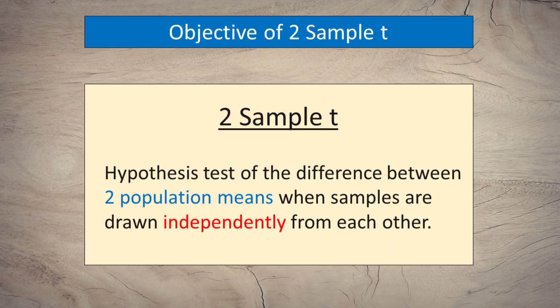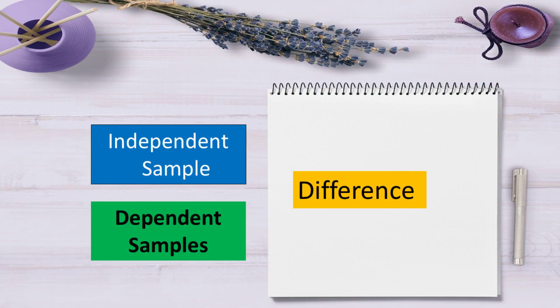Two-sample t is the hypothesis test of the difference between two population means when samples are drawn independently from each other. When you conduct a hypothesis test using two random samples, you must choose the type of test based on whether the samples are dependent or independent.